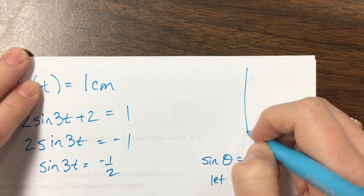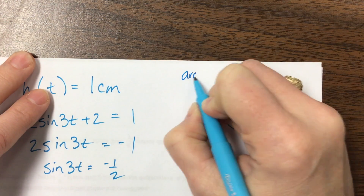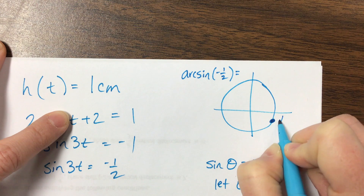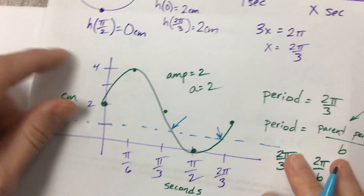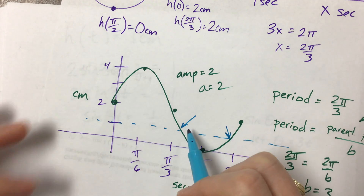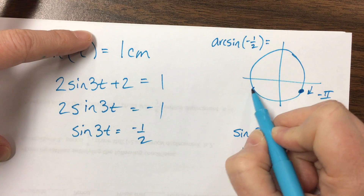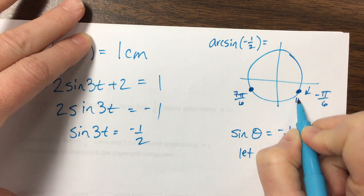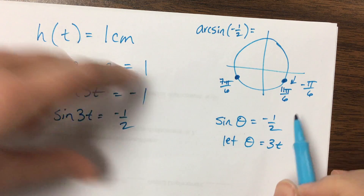If we think about the unit circle, arc sine of −1/2 gives negative π/6, going in the negative direction. However, a negative time value doesn't work since we're starting at time 0. So we think about the two unit circle angles where sine = −1/2: that's 7π/6 and 11π/6.